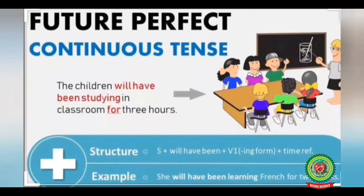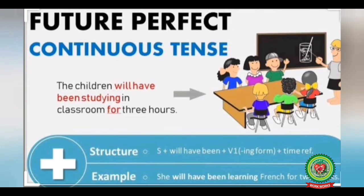See the examples: 'The children will have been studying in the classroom for three hours.' 'She will have been learning French for two weeks.' The structure of future perfect continuous tense is: subject plus will/have been plus V1-ing form plus time reference.